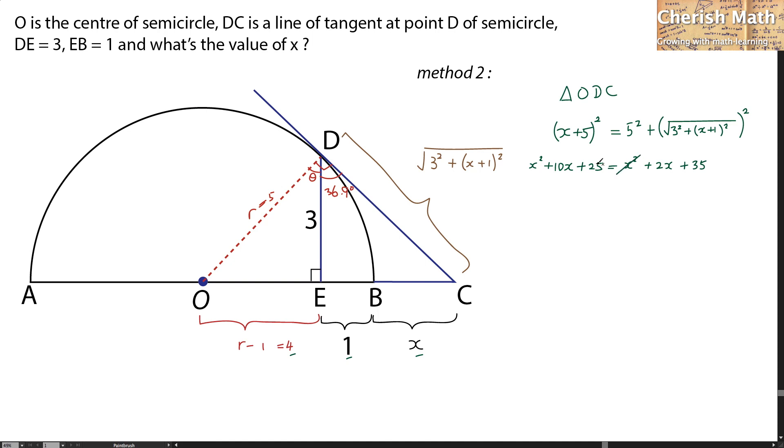And x squared is gone. Finally, the value of x is 1.25 units. And we solved the puzzle by using both the methods I've showed up here. Thanks for watching and please subscribe.